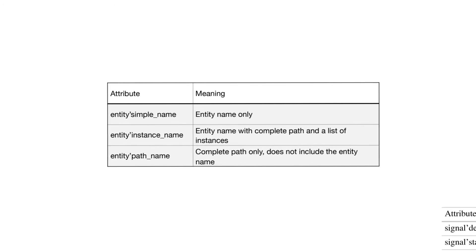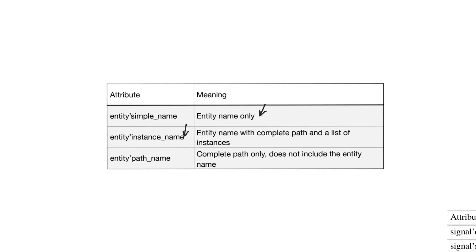Another class of attributes acts on components, entities, or instances. The entity name attribute returns the name of the entity as a text string. The instance name attribute returns not only the entity name but also the full path through all components and declarations down to every instance of that entity used in the design. This is relevant when we look at structural design, where designs can be used as components and instantiated multiple times. The path name attribute returns only the path, but not the entity name.